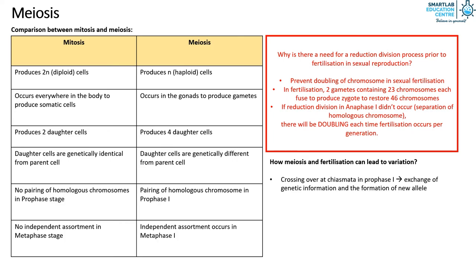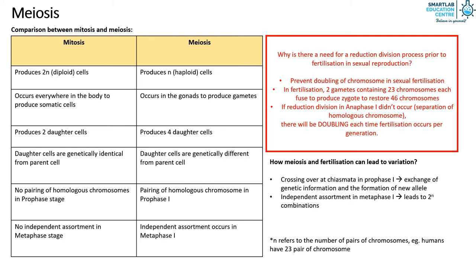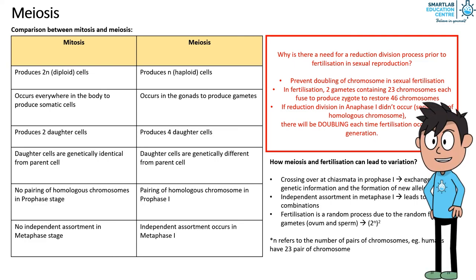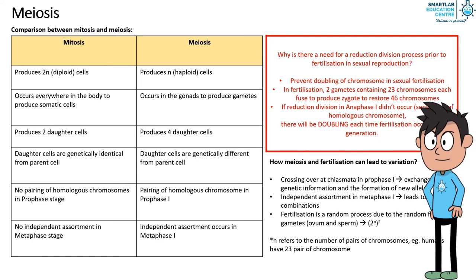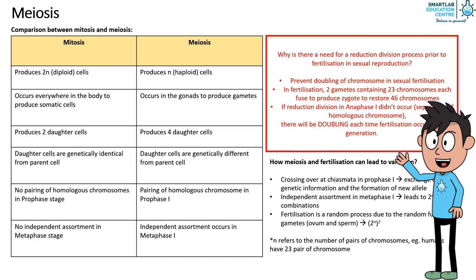Independent assortment in metaphase 1 leads to 2 to the power of n possible combinations of chromosome arrangements along the metaphase plate. Lastly, fertilization itself is a random process due to the random fusion of gametes. That's all for today — thank you for learning with me. Stay tuned for more interesting lessons. See you next time, bye bye.